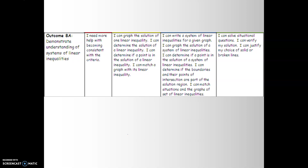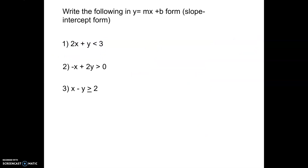Level four is being able to solve situational questions — those are more of your word problems and graphing. As a warm-up, we're going to convert the following into y = mx + b form. These have linear inequality signs, but we are going to ignore them and work with them as if they were an equal sign. The only time we have to flip the inequality is if we're dividing or multiplying by a negative.